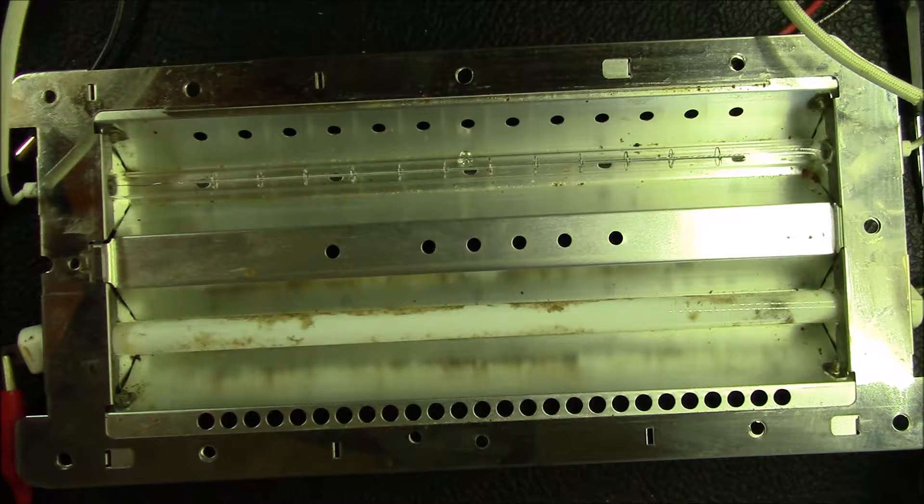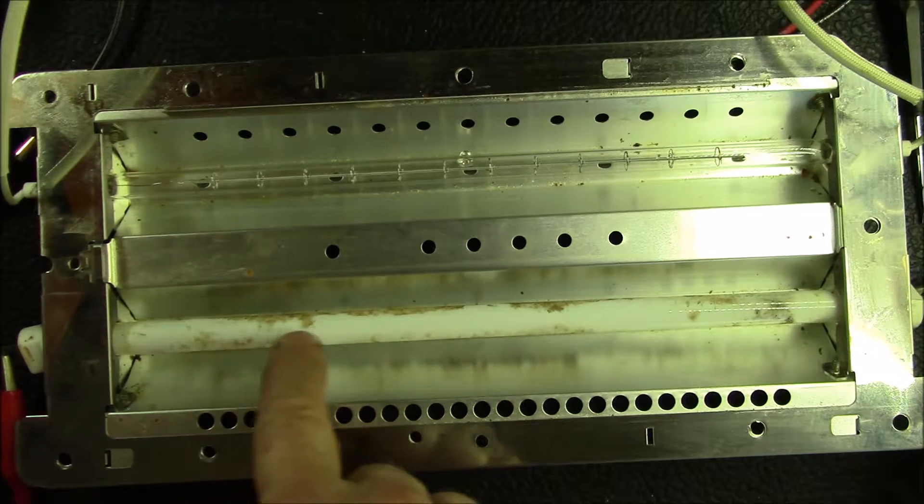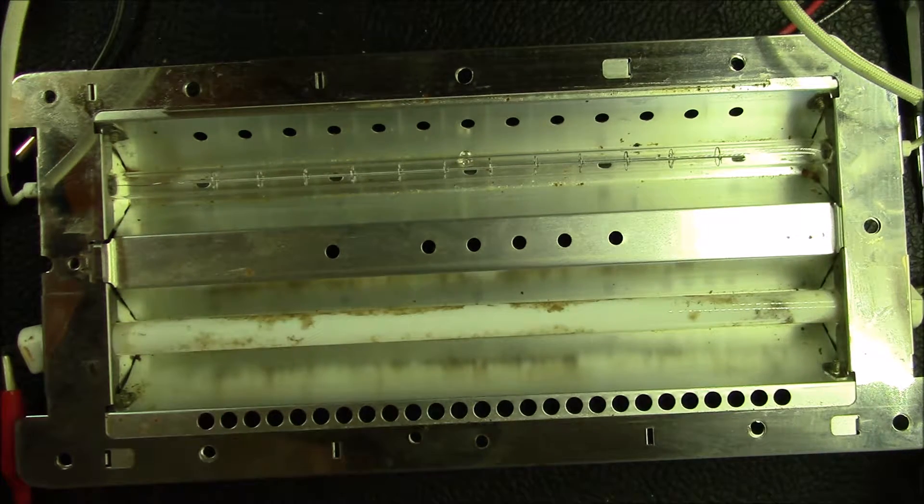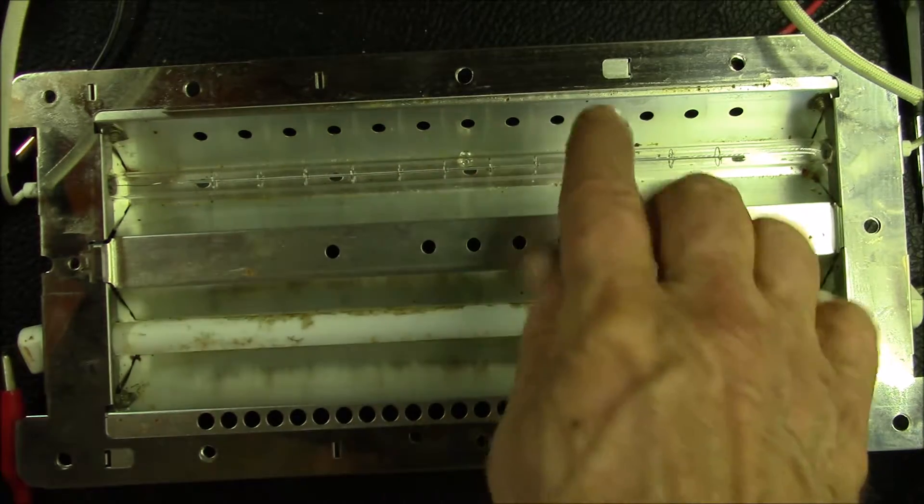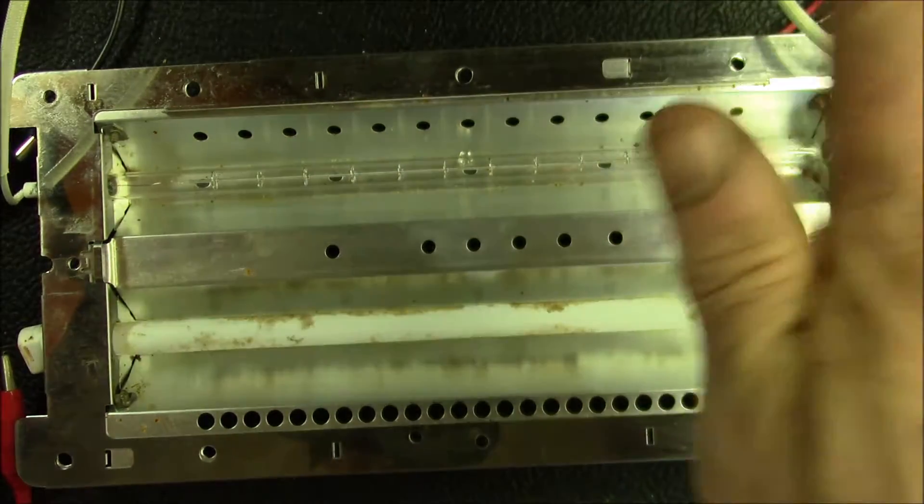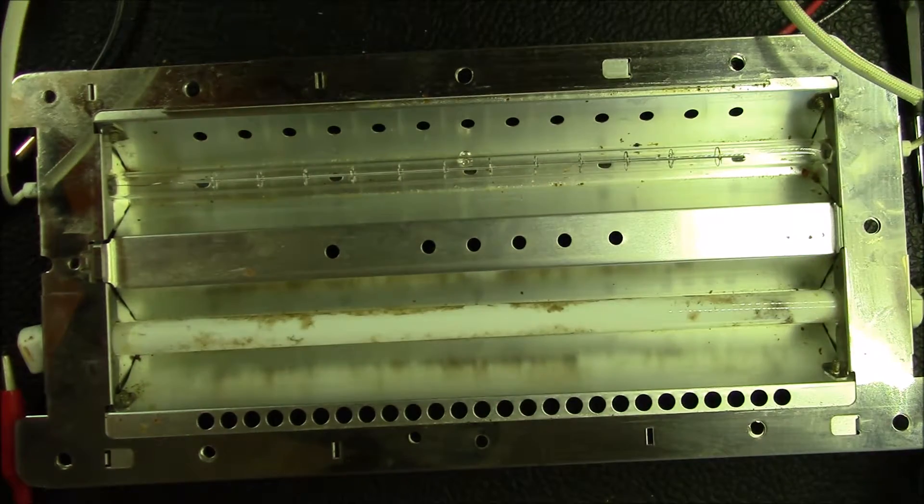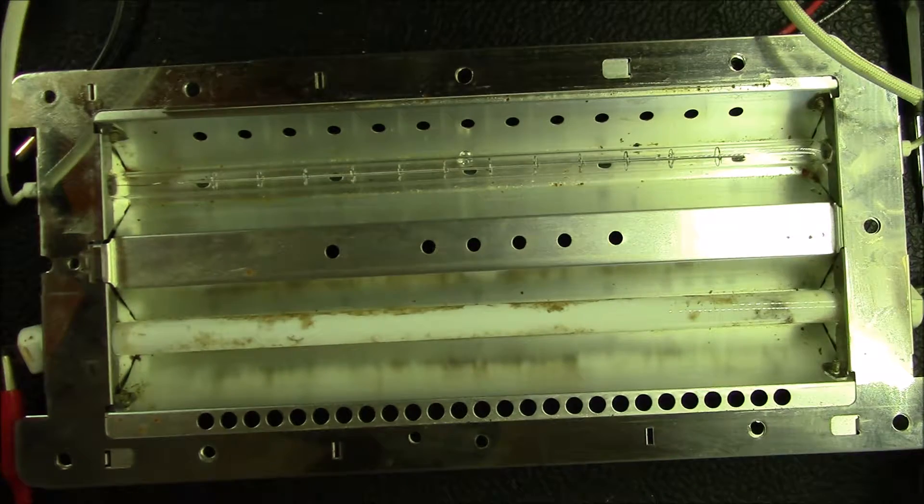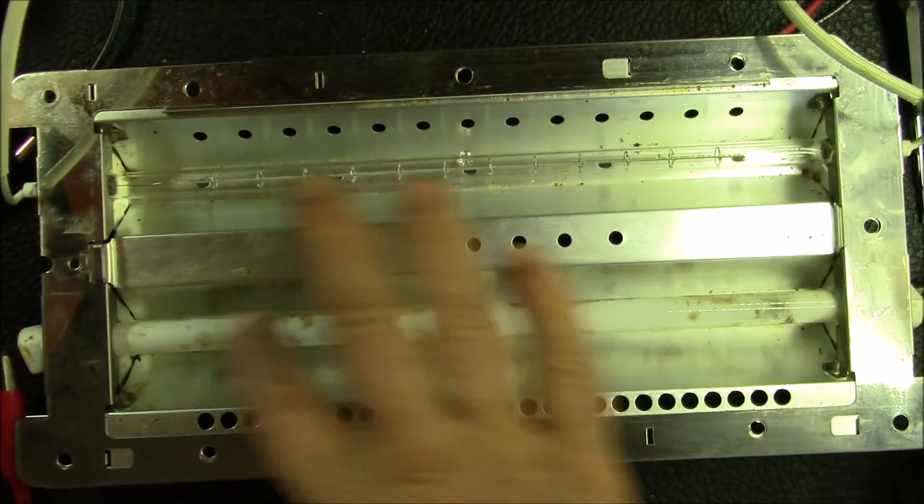You can see where I didn't clean off all the gunk on this ceramic element. You can imagine this bulb is sitting on top of the oven—there's an open screen below this, and there's nothing to prevent grease and stuff splattering off the food you're cooking, because this is essentially a broiler.